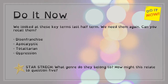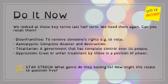If you were in the live part of the lesson you will have already seen this do-it-now. We talked about the words disenfranchise, apocalyptic, totalitarian and oppression, and we talked about these definitions: removing someone's rights, complete disaster, totalitarian government has complete control, and cruel and unfair treatment is another word for oppression. They all belong to the dystopian genre which we covered way back before Christmas, before this latest lockdown.